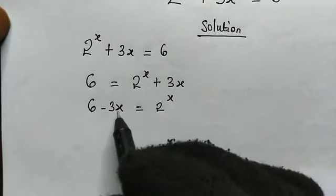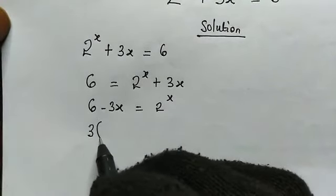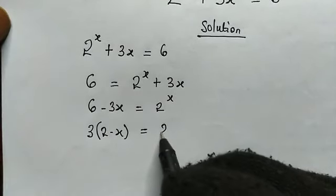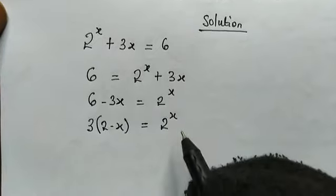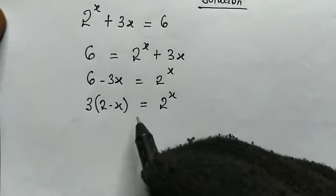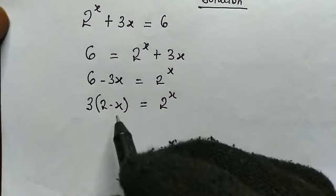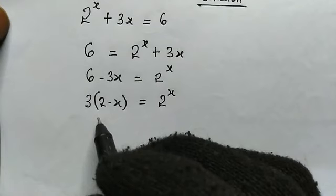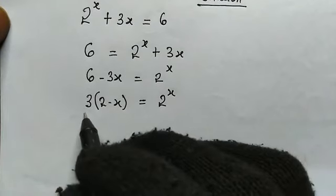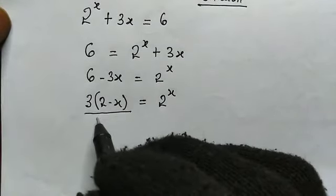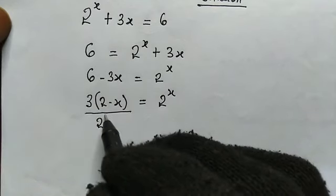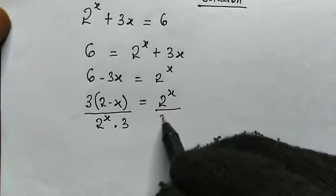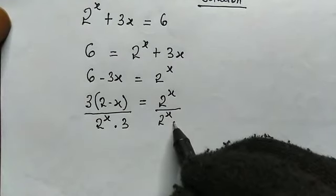Remember from here, 3 is common, so we're going to factor out 3, and we're left with 2 minus x, then this equals 2 raised to the power of x. So from here, let us divide both sides by 2 to the power of x times 3. So that will be divided by 2 to the power of x multiplied by 3, and here divided by 2 to the power of x multiplied by 3.